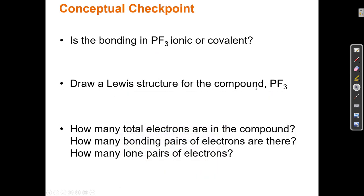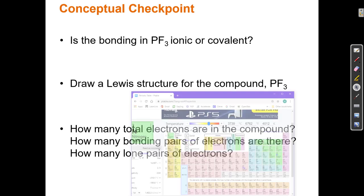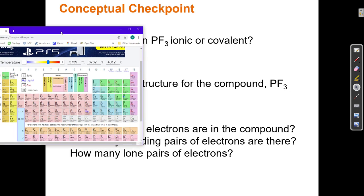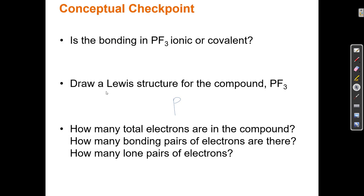Draw a Lewis structure for the compound PF3. To draw a Lewis structure, the first thing we need to do is draw a Lewis structure of each atom in the compound. So let's find P. I first draw the symbol P, and I have to figure out how many electrons it has. To find out how many electrons P has, I go back to the beginning of the row — the third period — and count over to P: one, two, three, four, five. So P has five valence electrons.